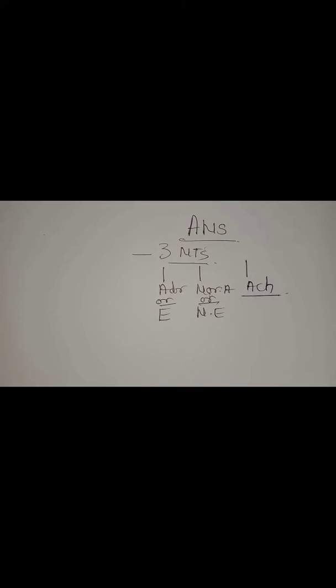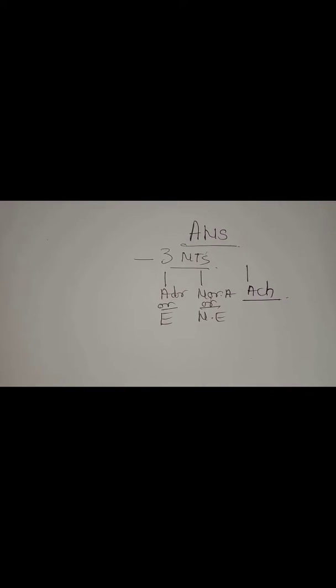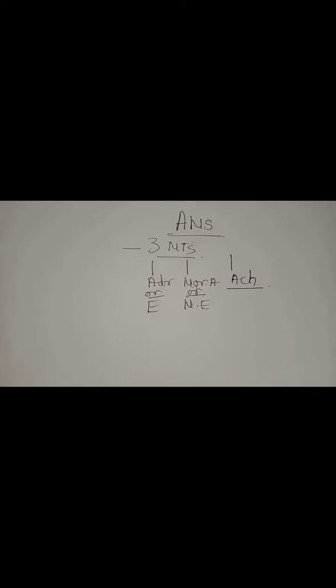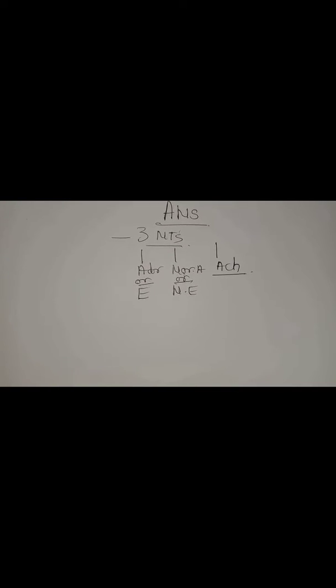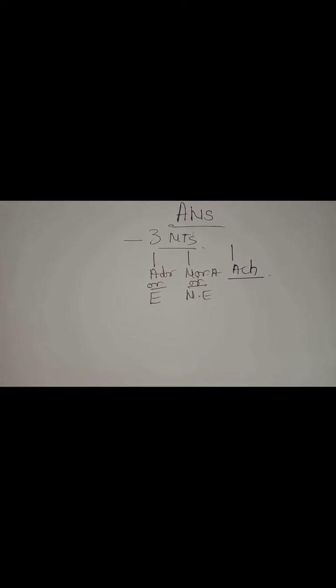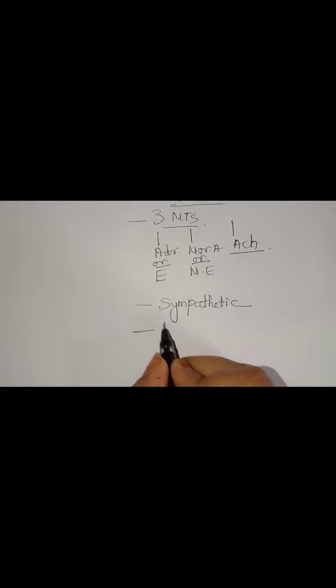In ANS, we come across many words — synonyms we use often — like adrenergic, cholinergic, sympathetic, parasympathetic, sympathomimetics, parasympathomimetics, sympatholytics, parasympatholytics, anti-adrenergic, anticholinergic, and so on. Actually, all of these are similar words used for the main topics called sympathetic and parasympathetic.